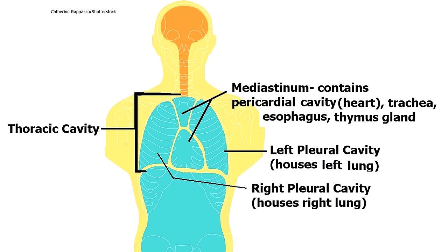First, the left pleural cavity houses the left lung. Then you have the middle part of the thoracic cavity called the mediastinum — from a Latin word meaning midway — which houses organs such as the heart, esophagus, thymus gland, and trachea.